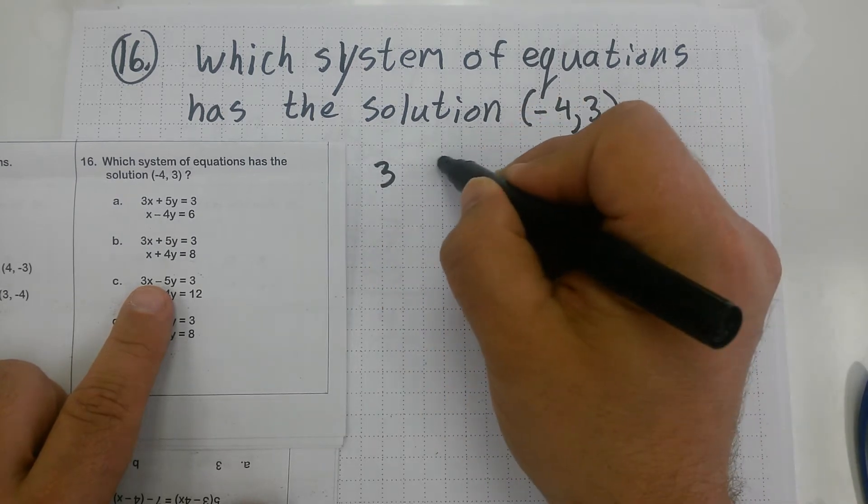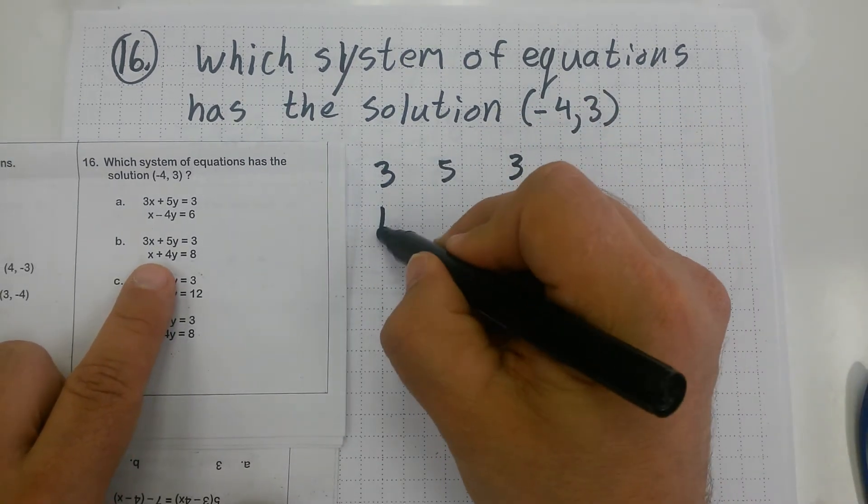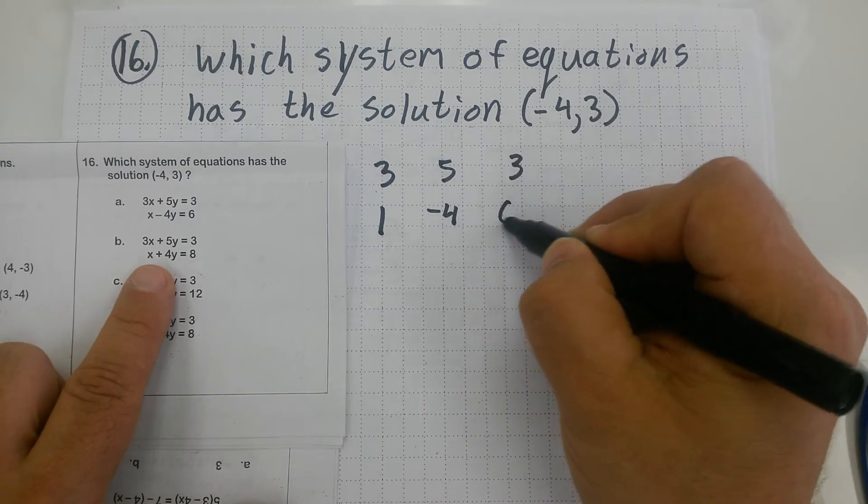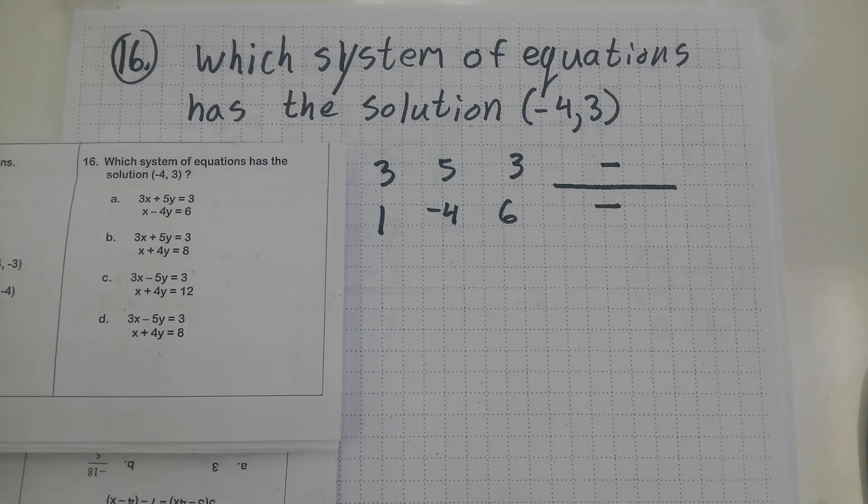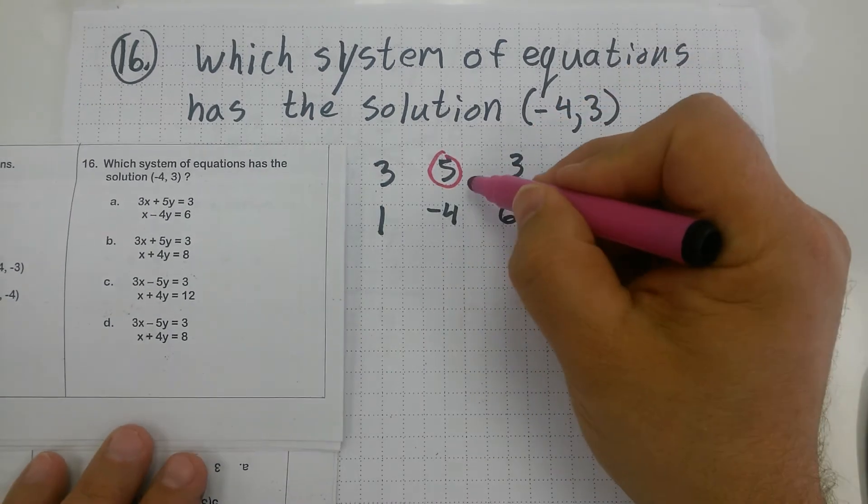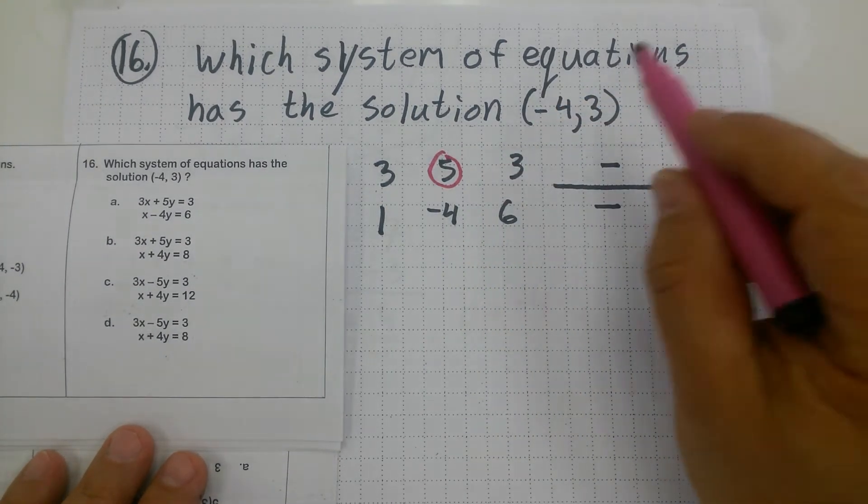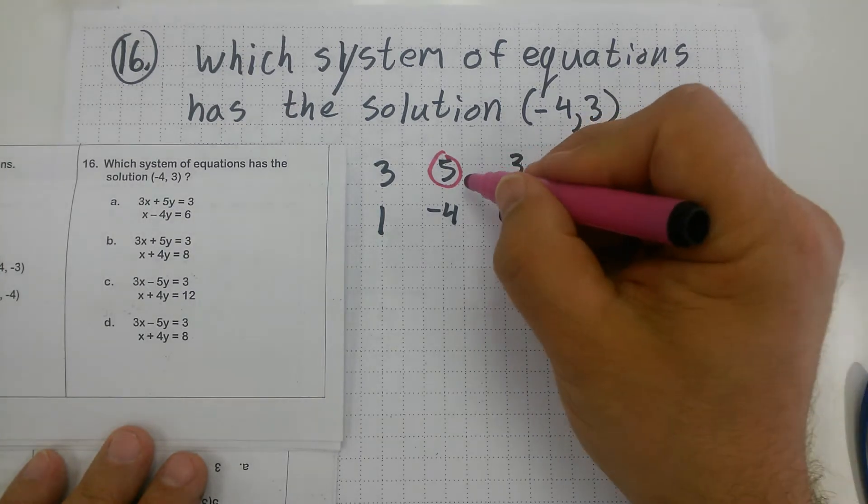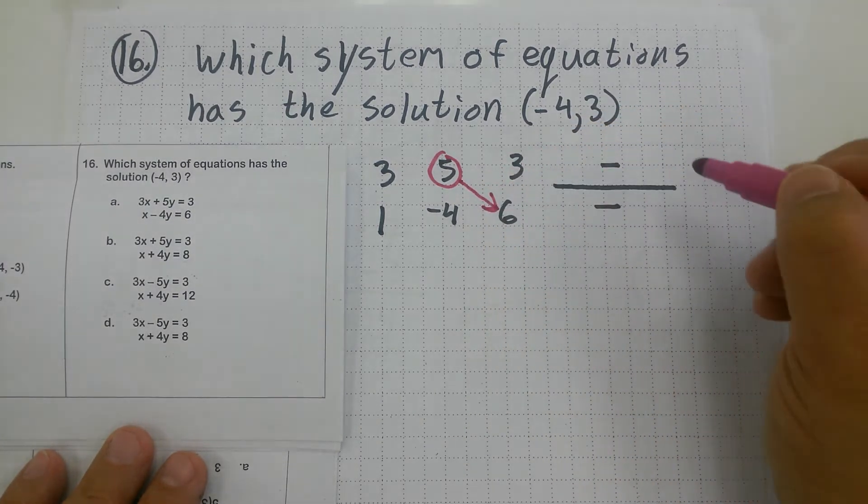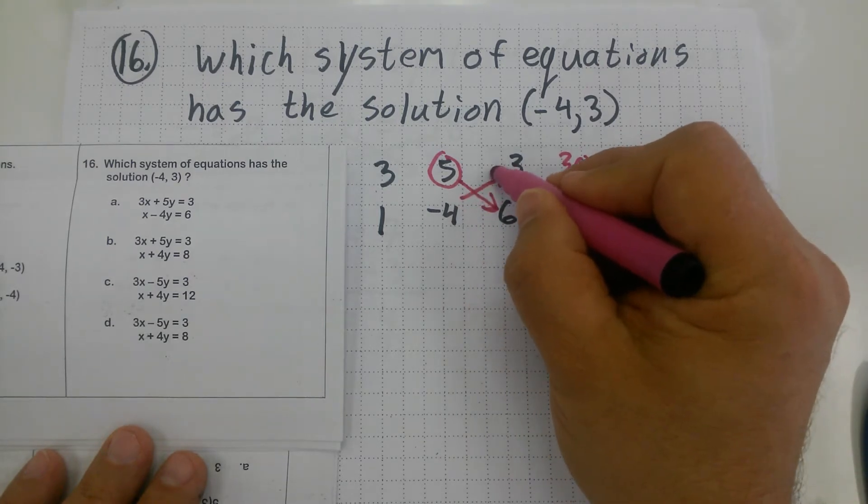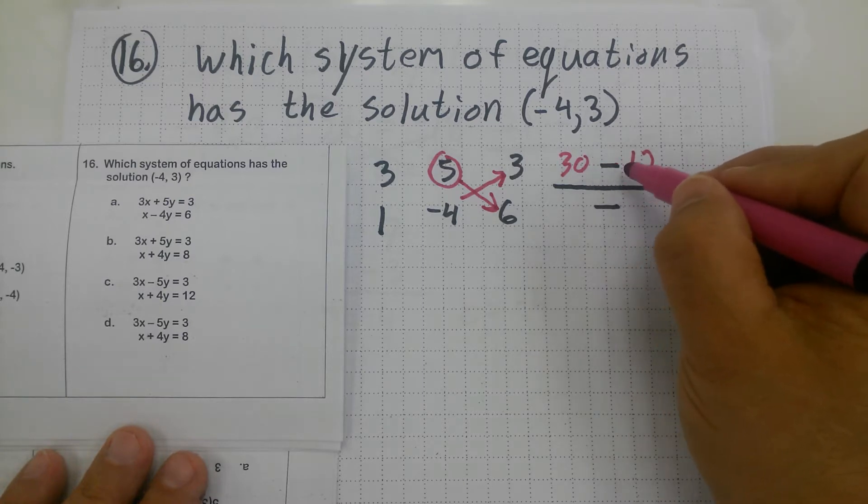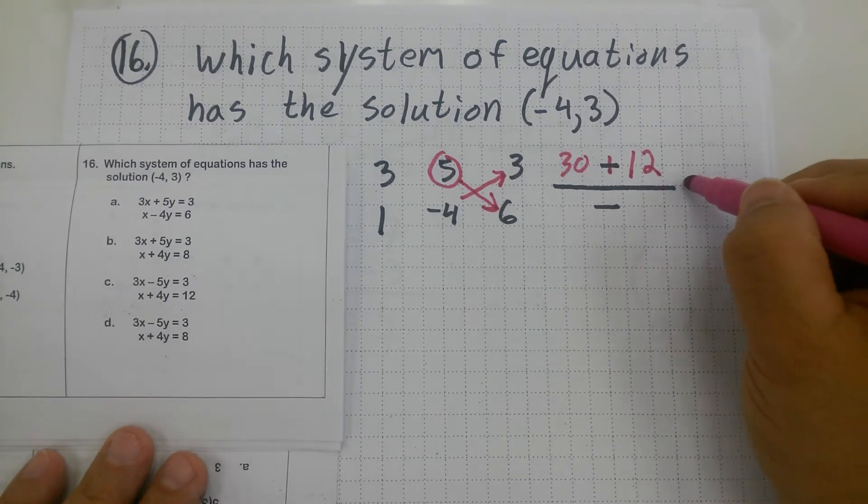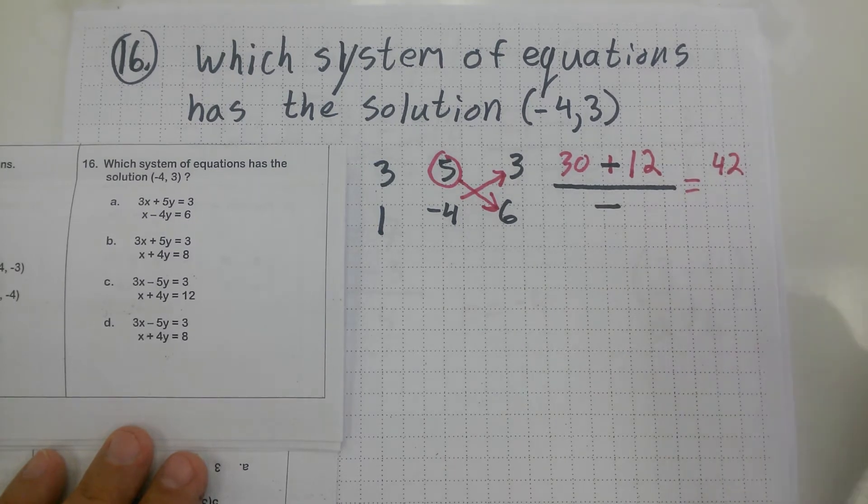So I have 3, 5, 3, 1, negative 4, 6. I'm going to set up my Kramer's rule template here, and now I'm going to circle that 5 up top as my pivot. All this Kramer's rule is going to find is the x value, so I'm looking for negative 4 as my answer. 5 times 6, that's 30. Negative 4 times 3, that's negative 12. Once I'm putting a negative negative, this is what I like about this template. I can just change that to positive. That looks like it's going to give me a 42 on top.